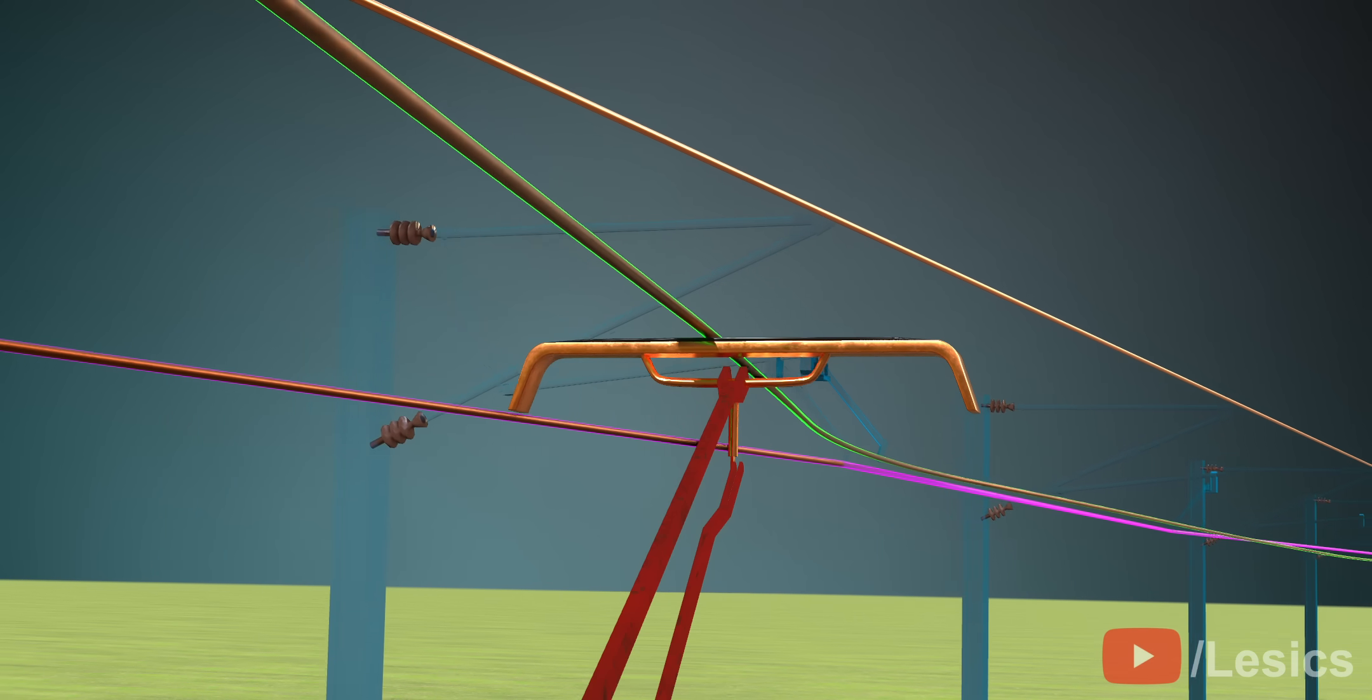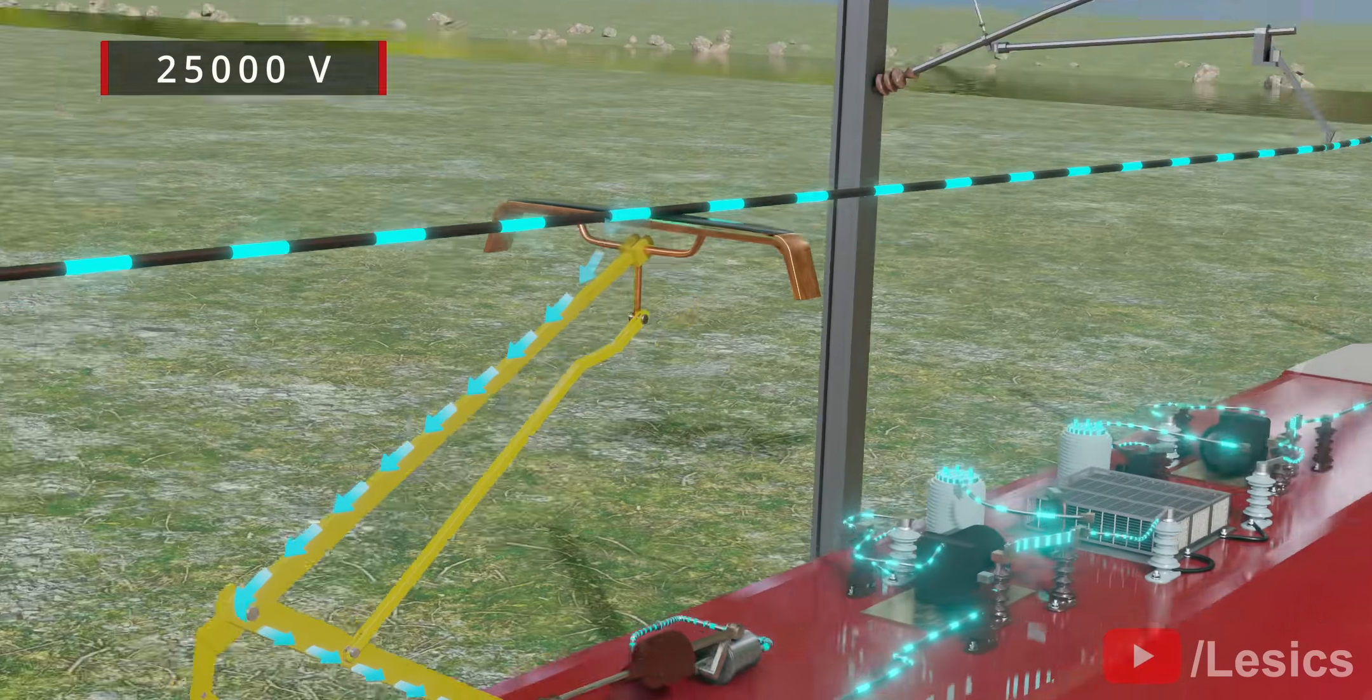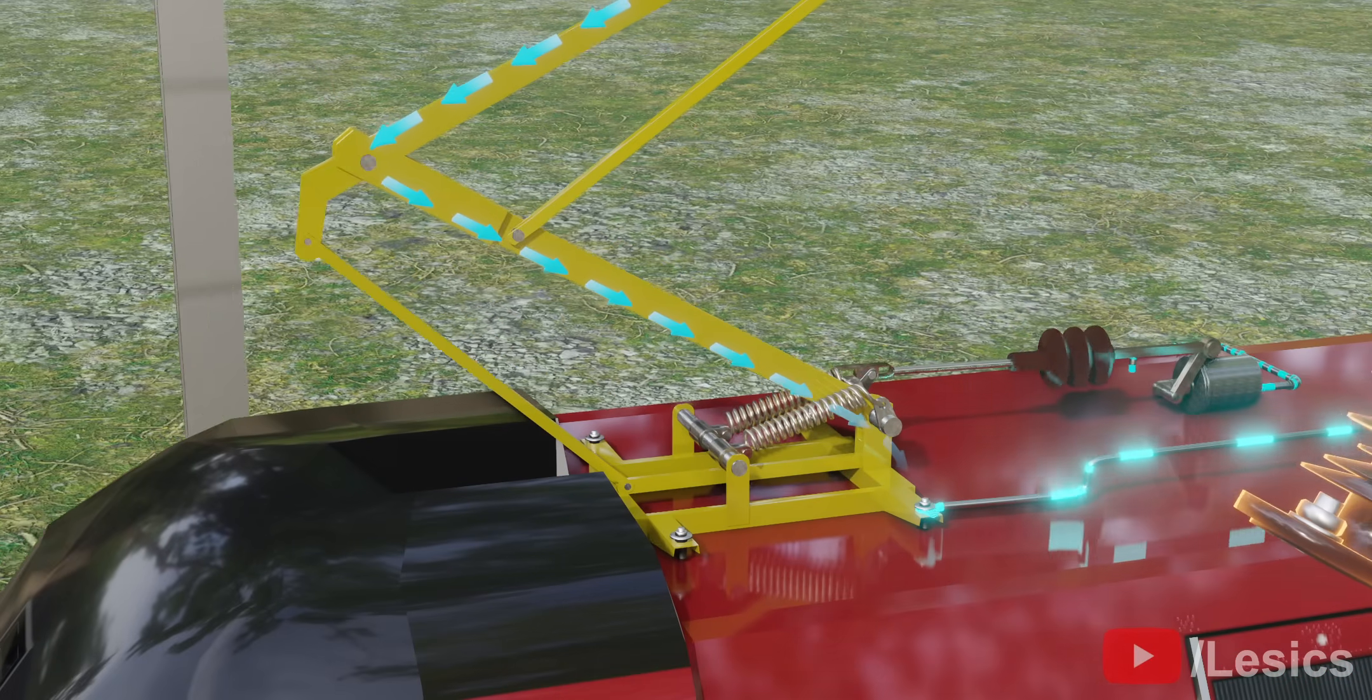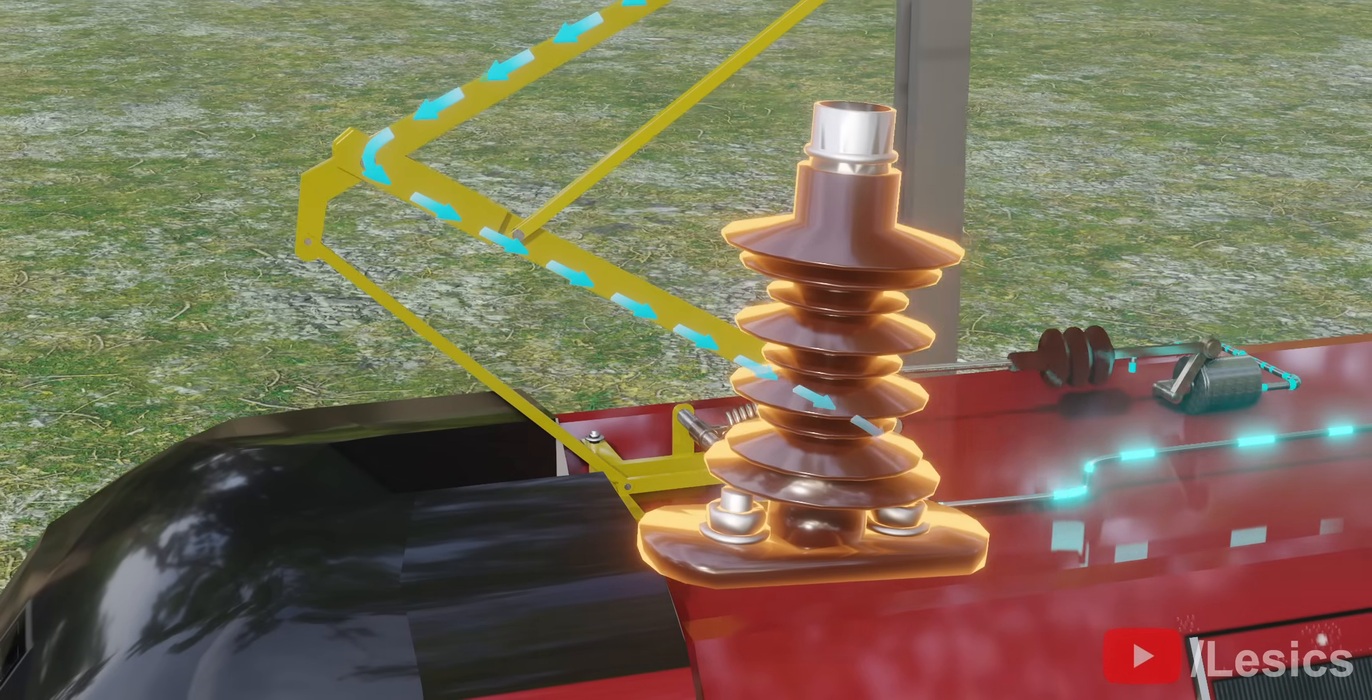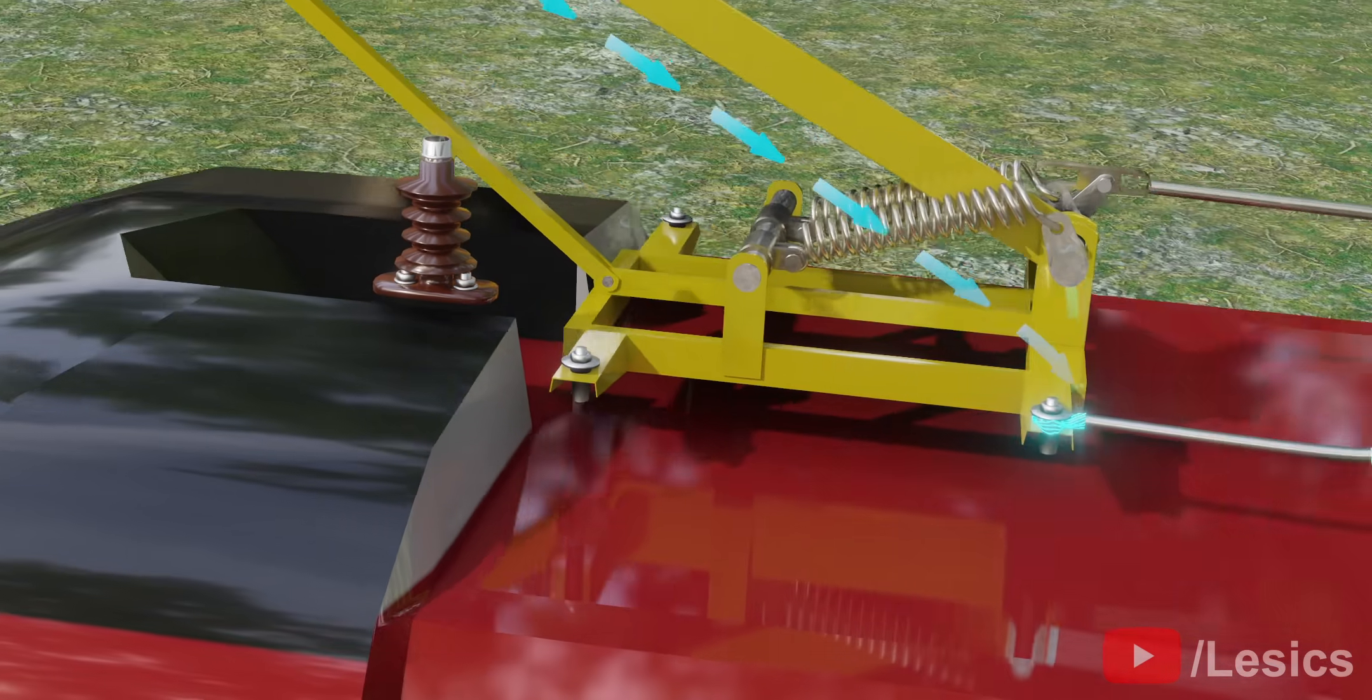The voltage across the pantograph is approximately 25,000 volts. So, to isolate the metallic body of the train from this high voltage, these insulators with high electrical resistance are used. They also provide good mechanical support to the pantograph.